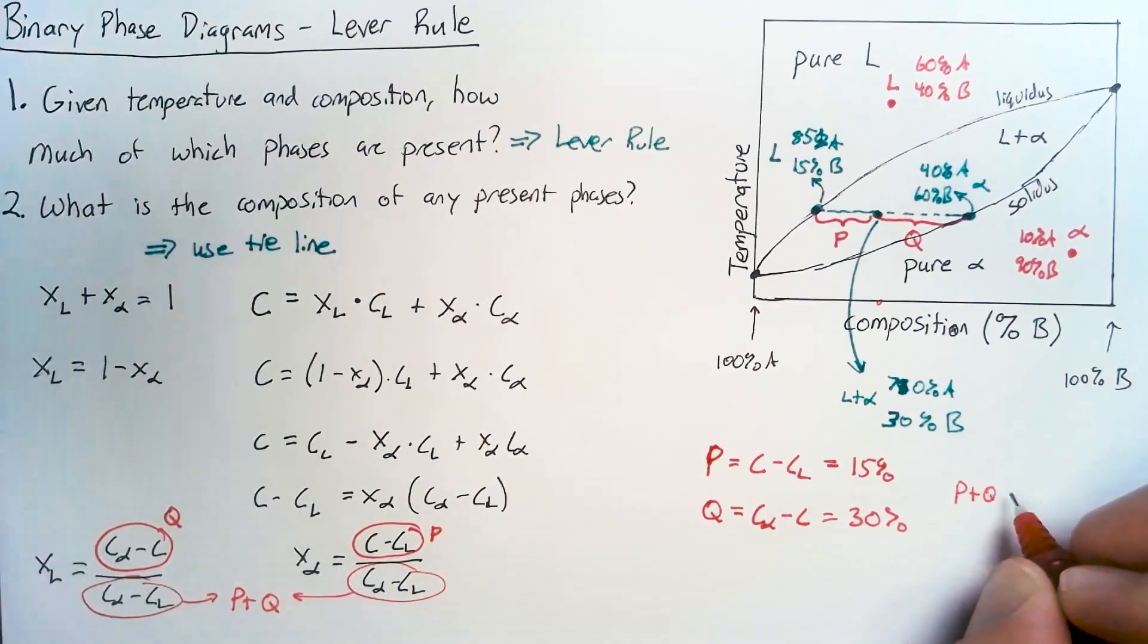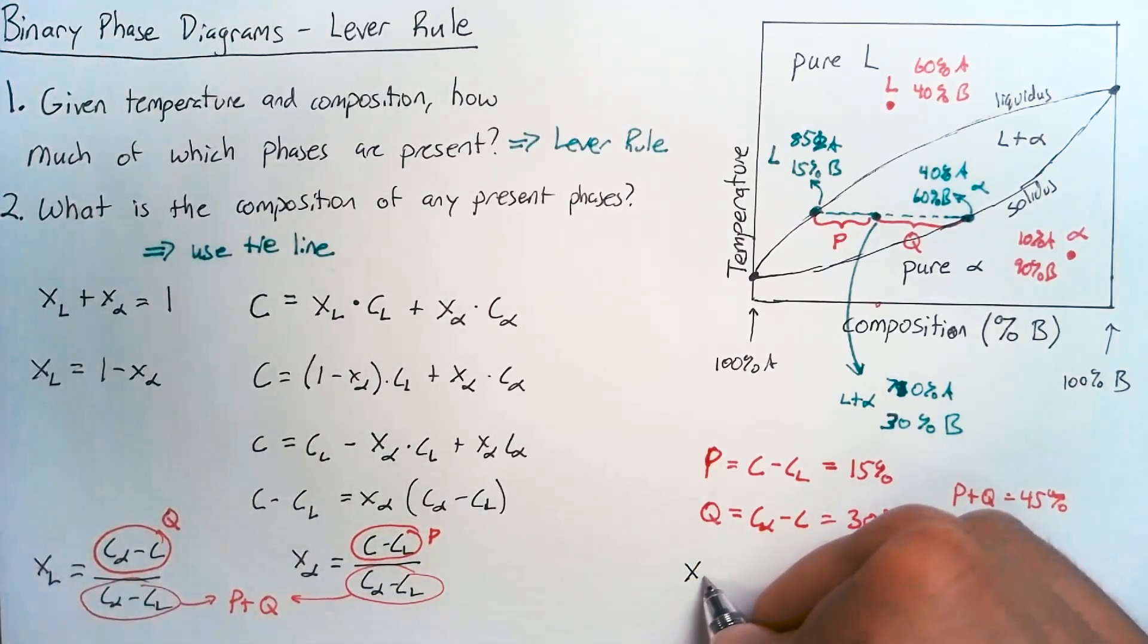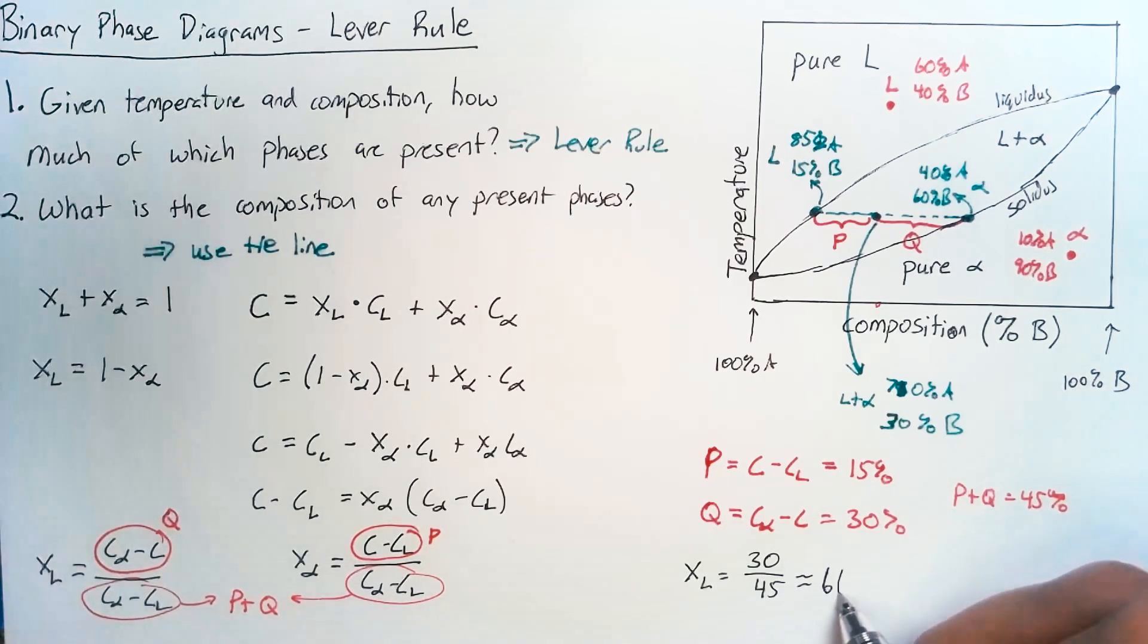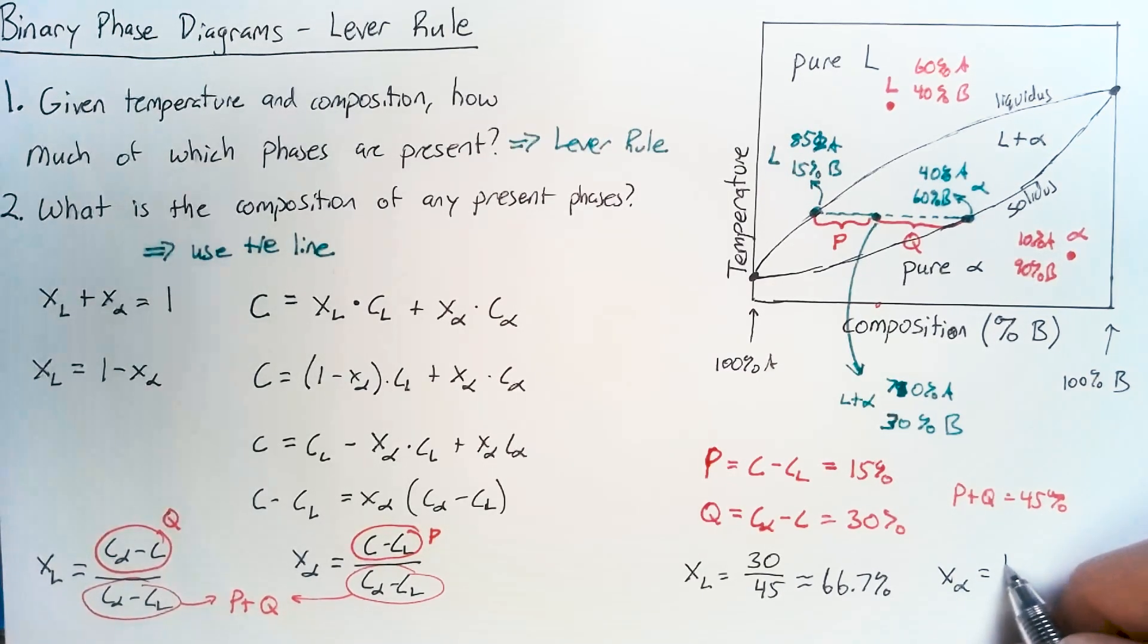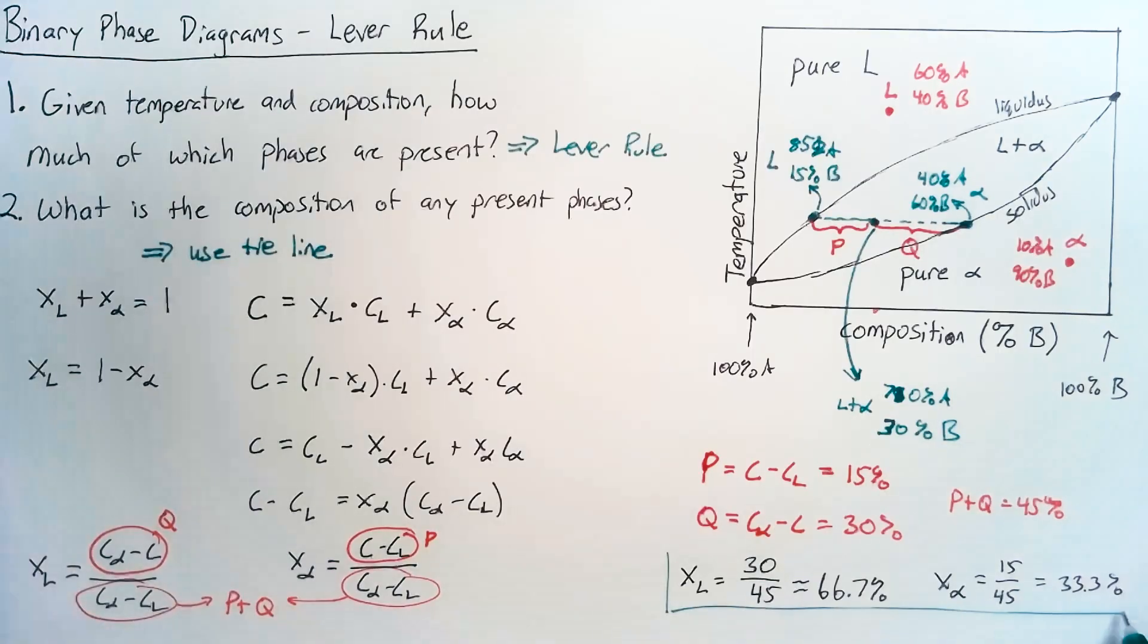which makes P plus Q 45%. So that means that X_L is going to be equal to 30 divided by 45, which is two thirds. So 66.7%. And our X_alpha is going to be 15 over 45 or one third, which is 33.3%.